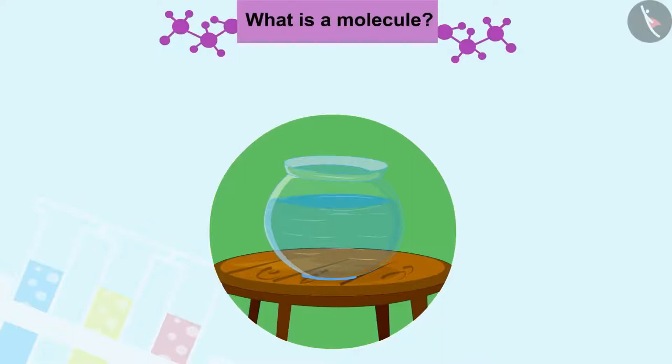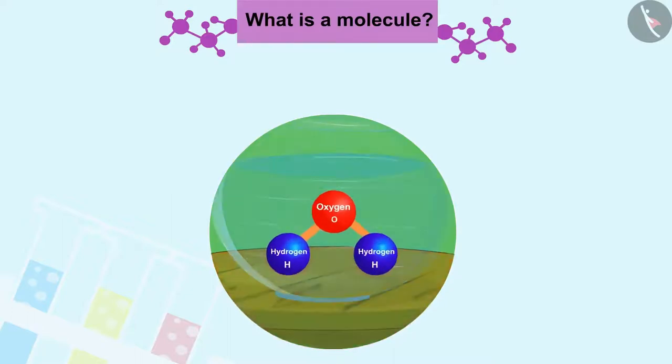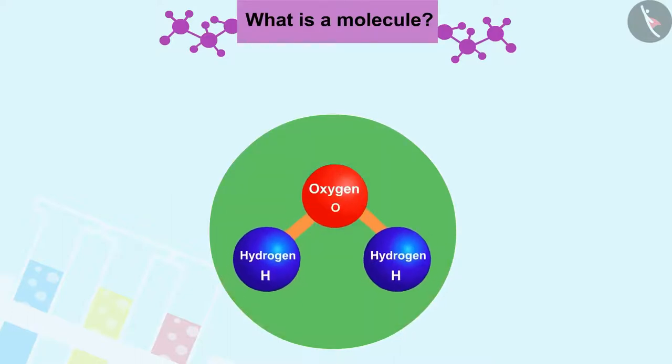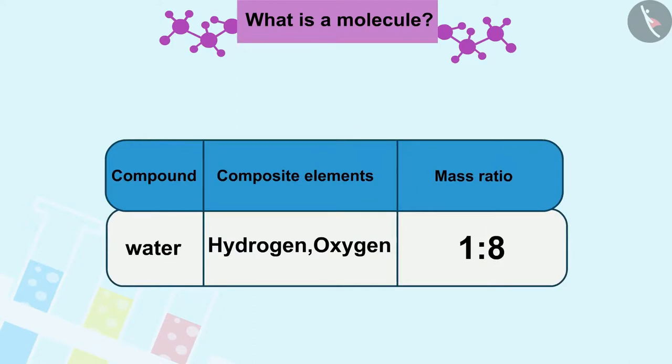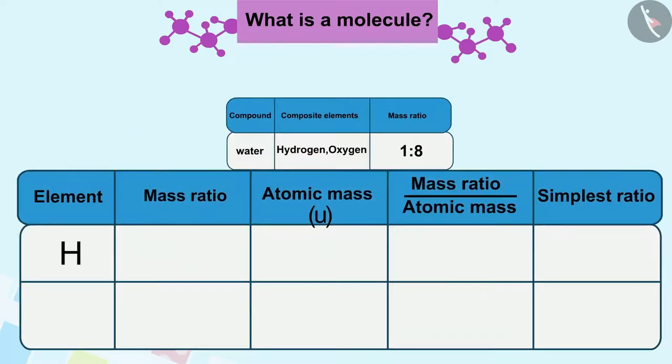Let us for example find the proportion of the number of atoms used in a water molecule. The mass ratio of hydrogen and oxygen atoms in a water molecule is 1:8, and the mass of hydrogen atom is 1u, the mass of oxygen atom is 16u. Now just by dividing the mass ratio of hydrogen and oxygen by the mass of their atoms, in this way we can find the ratio of the number of atoms used in the water molecule, H:O, that is 2:1.